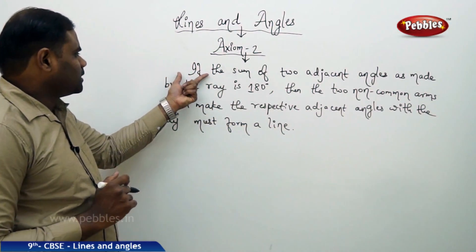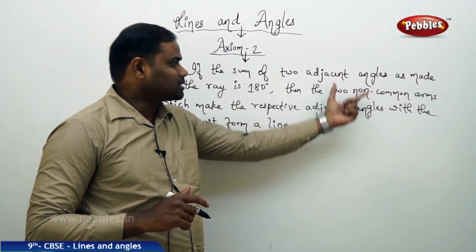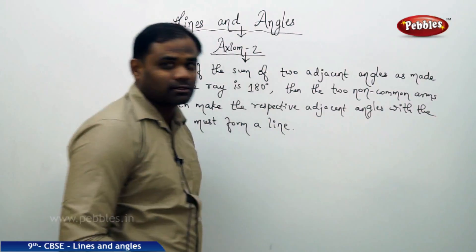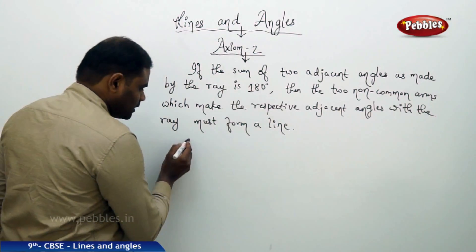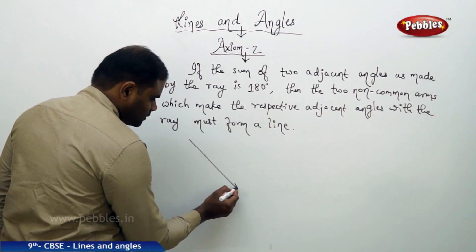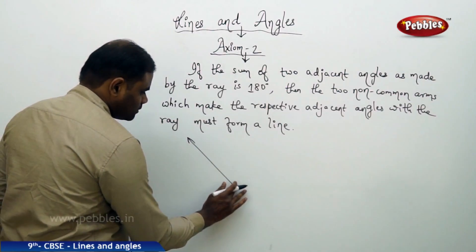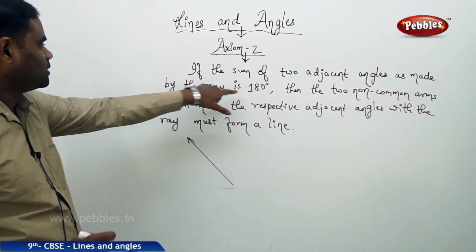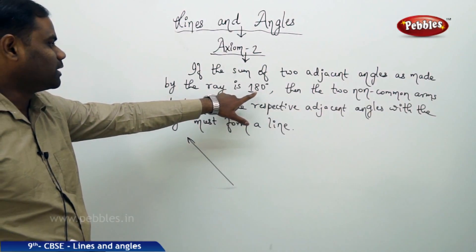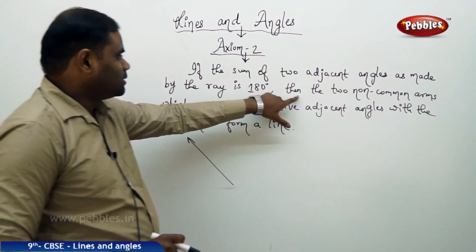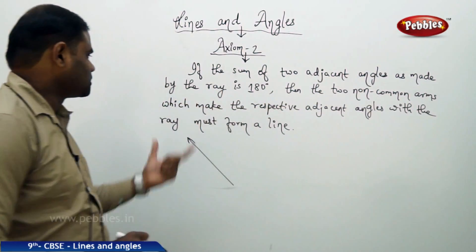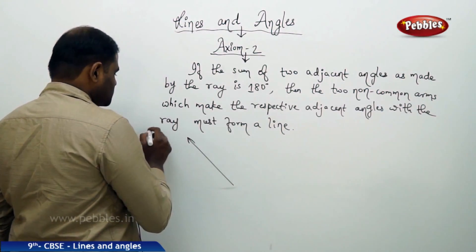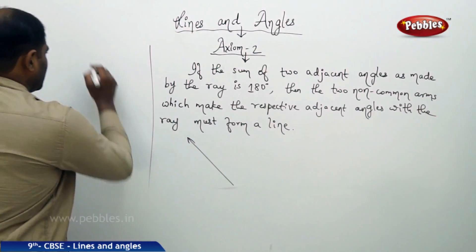The axiom clearly states: if the sum of two adjacent angles as made by the ray is given — say for example I have a ray, this ray makes adjacent angles, and the sum of those adjacent angles is 180 degrees — then the two non-common arms which make the respective adjacent angles, say for example the adjacent angles here are x and y...